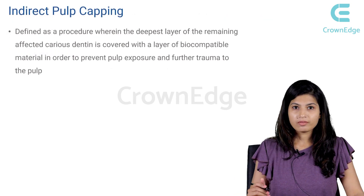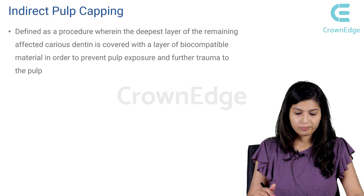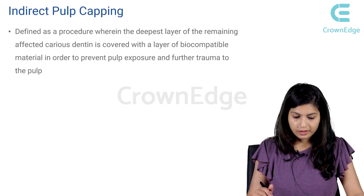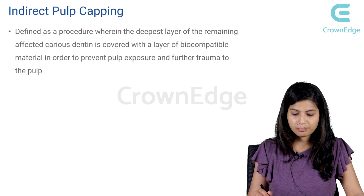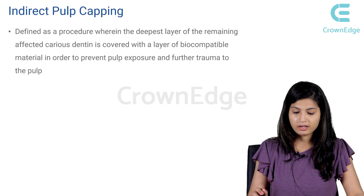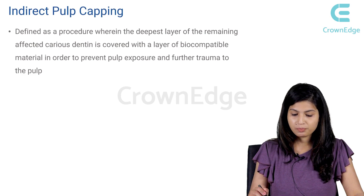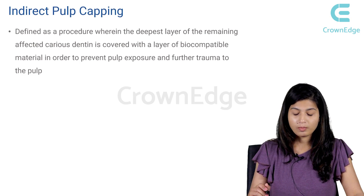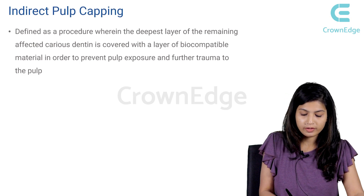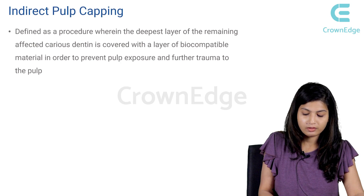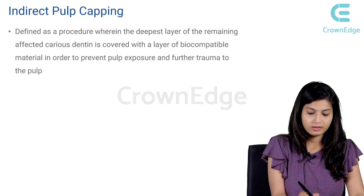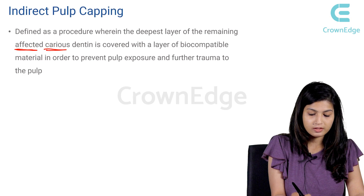The next topic is indirect pulp capping. Indirect pulp capping is defined as a procedure wherein the deepest layer of the remaining affected caries dentin is covered with a layer of biocompatible material in order to prevent pulp exposure and further trauma to the pulp. A key term here is 'affected caries dentin.'